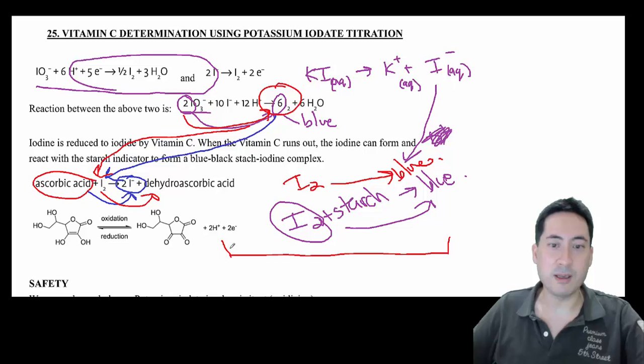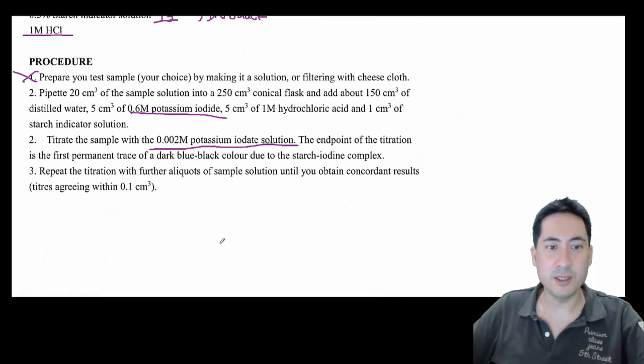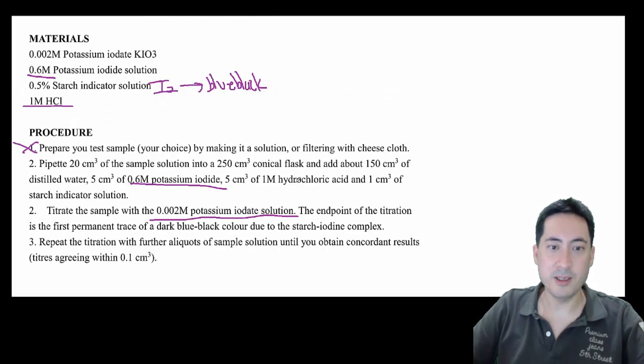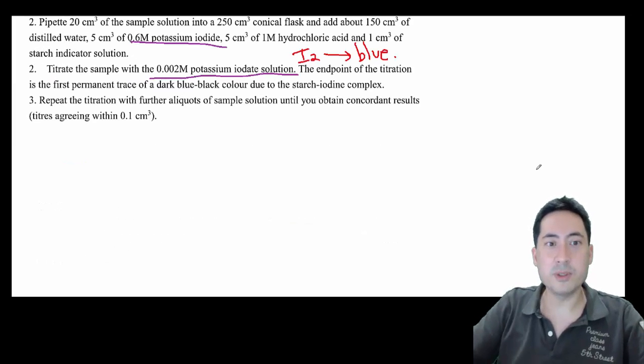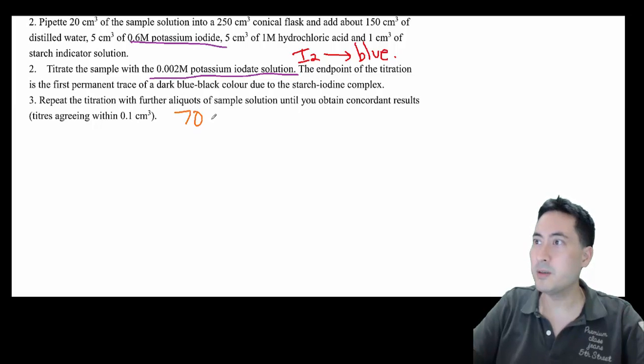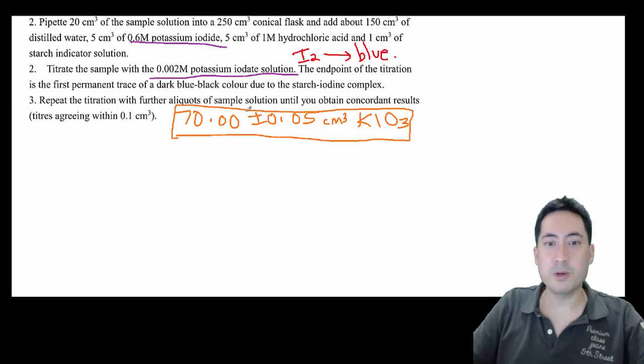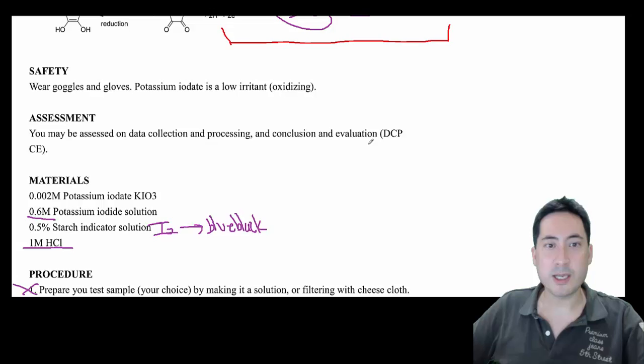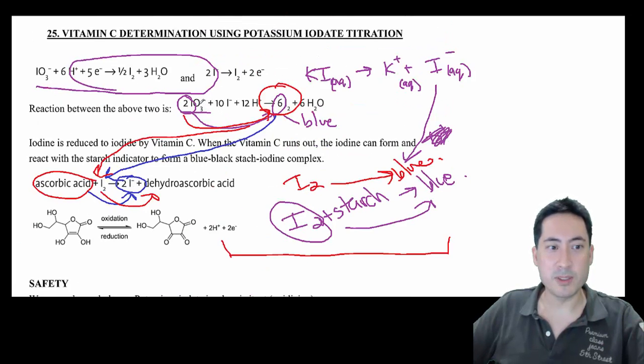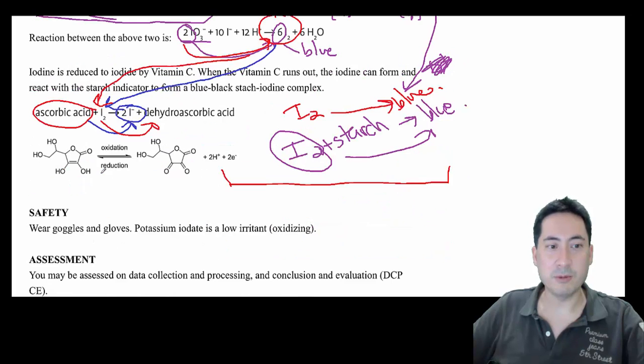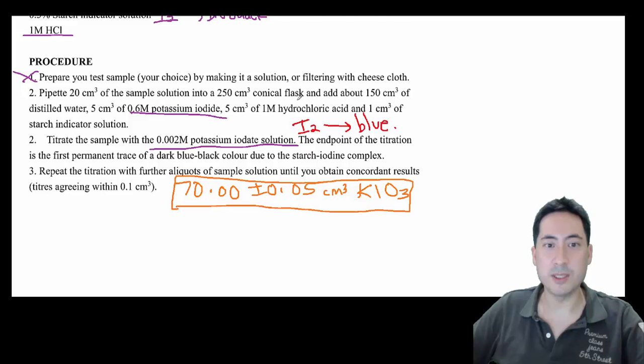So what you do is you keep on adding the iodate, and that keeps on converting that to iodine, and then the iodine keeps on getting converted back to how it was. Then once you've used up all the ascorbic acid, it can't do that anymore, and the iodine will be left over and then it will react with the starch and go blue. So that's really fundamental to understand. Go back and listen to that again if you need to. So if you have what you have here, you're going to keep on adding the potassium iodate to the point where all the iodine is used up by this ascorbic acid.